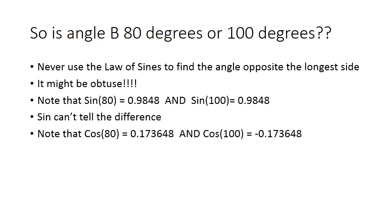Now, take a look at cosine. The cosine of 80 degrees is 0.173648. But the cosine of 100 degrees is negative 0.173648. The absolute values are the same. But for this one, notice it's a negative number. Cosine can tell the difference between an acute angle and an obtuse angle. Obtuse angles will have negative cosines.